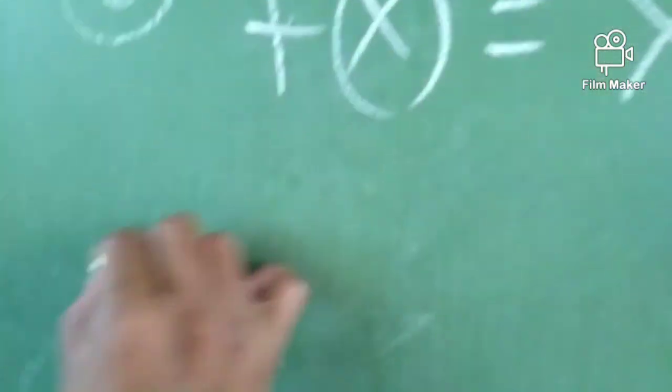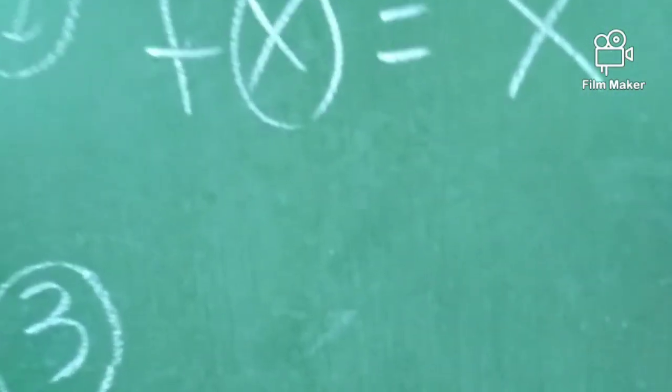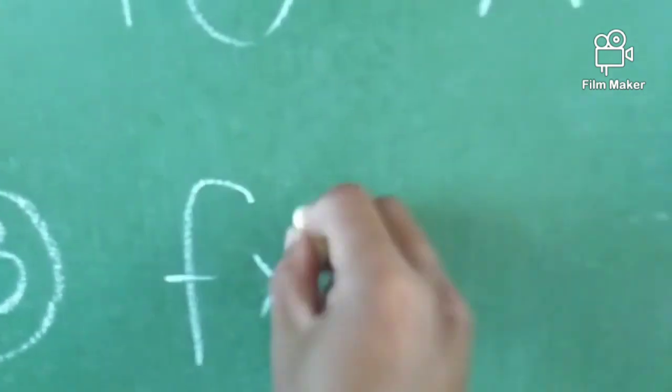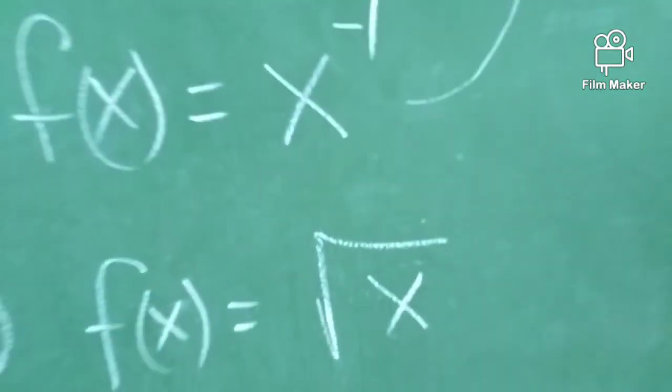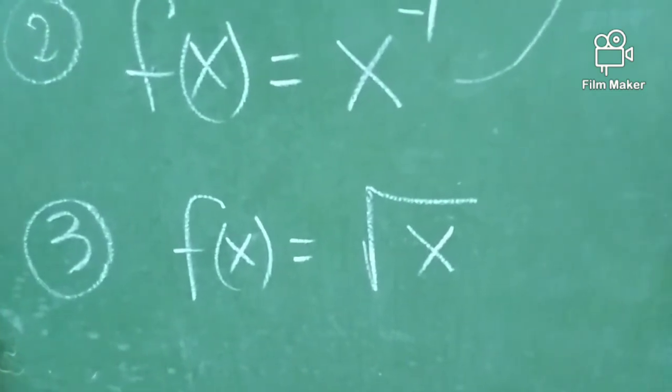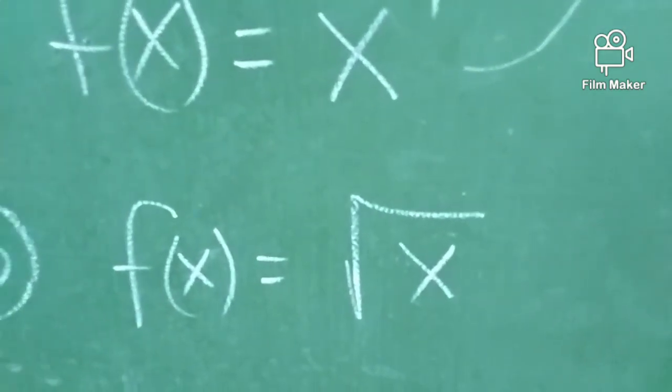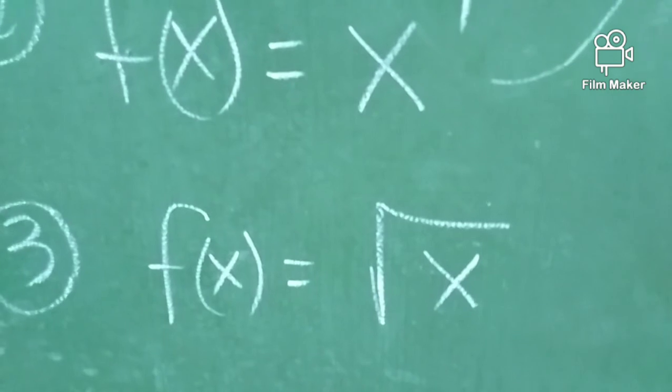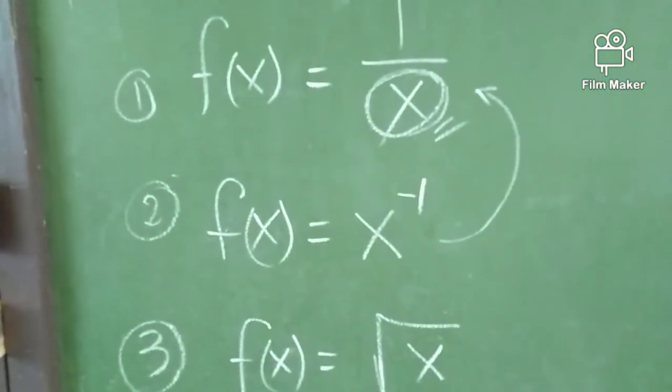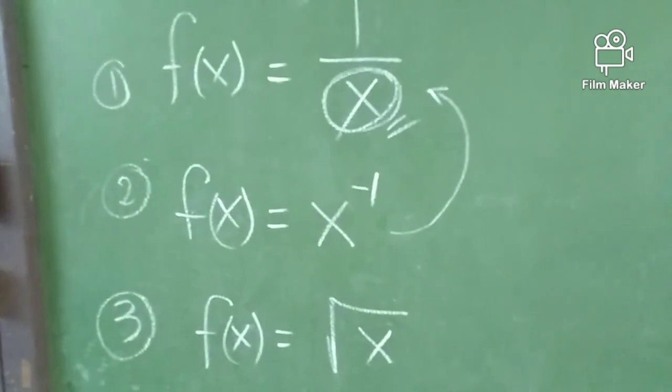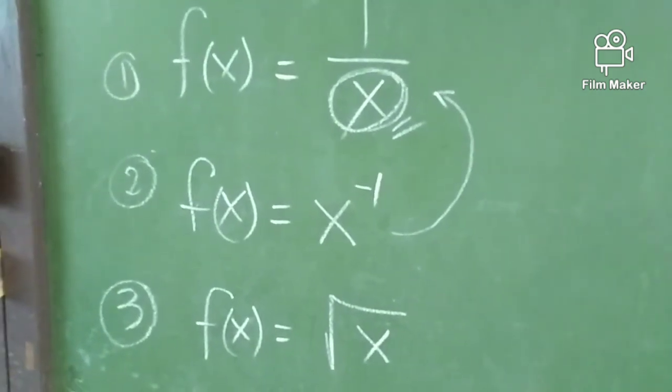The third one is this. Function of x equals the square root of x. When you see this, it's also not polynomial. So these three, we can say that they are not polynomials.